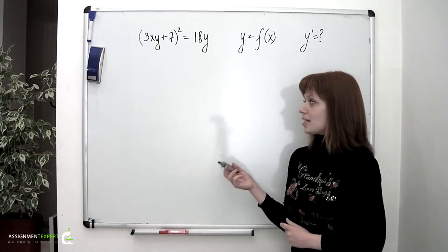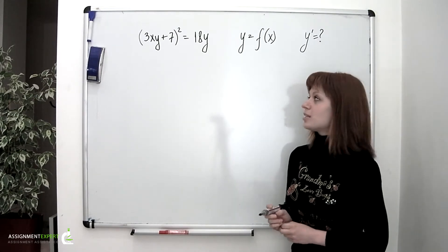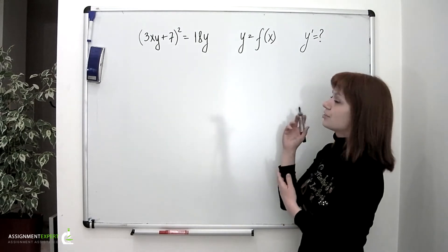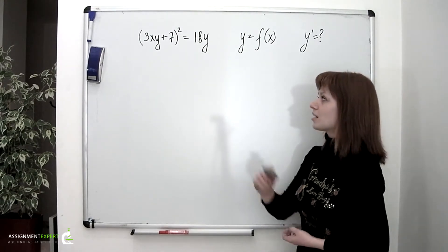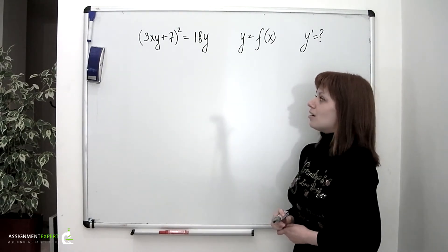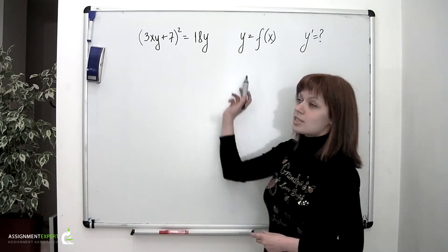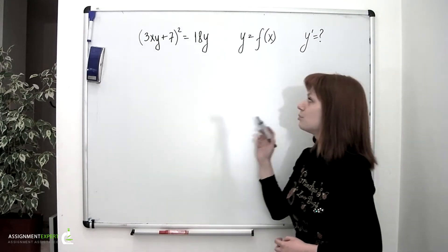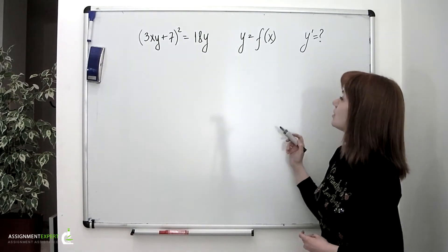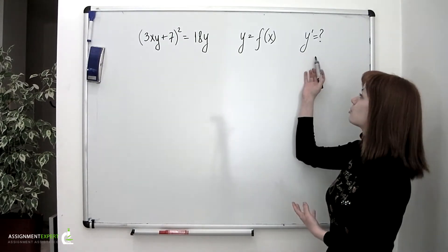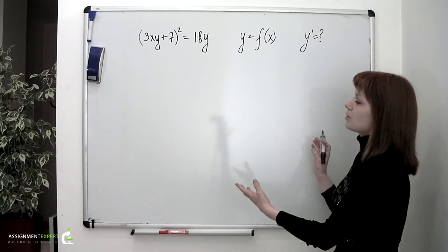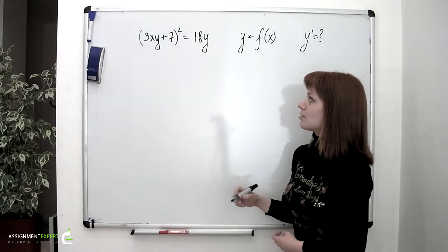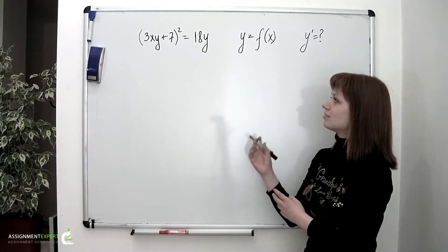One pretty and relatively easy way to find the derivative of a function given implicitly like ours is to differentiate both sides of the given equality. Then we will be able to express y prime by simplifying the obtained expression. So we suggest that we move that way.